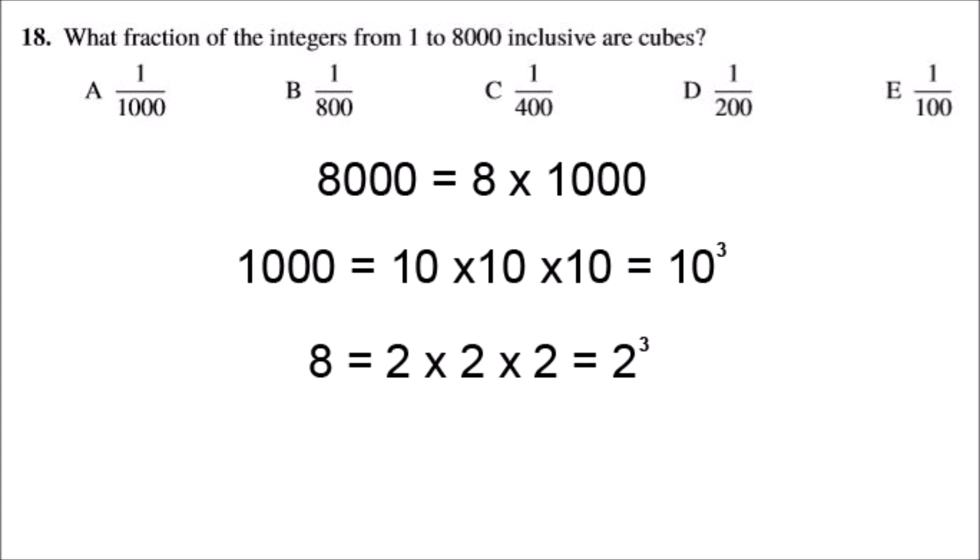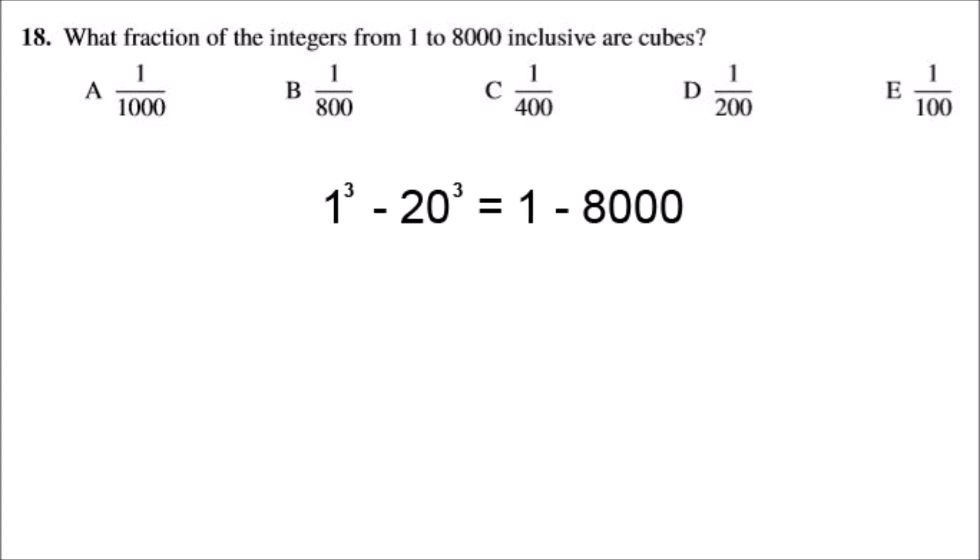So that means that 8,000 is the same as 2 cubed times 10 cubed, which 2 times 10 is 20, so it's the same as 20 cubed. And 1 is the same as 1 cubed, so the cubes of the numbers from 1 to 20 are between 1 and 8,000.